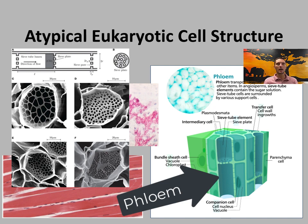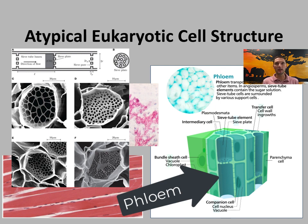Phloem sieve tubes have a disc-like structure with small holes that allow sap to pass through. During development, the nucleus and most other cell components break down and are absent in mature phloem tube cells. Only the plasma membrane remains, helping maintain pressure and cell shape. The companion cell located next to it helps load sugars into and out of the sieve tubes and ensures sieve cell survival.